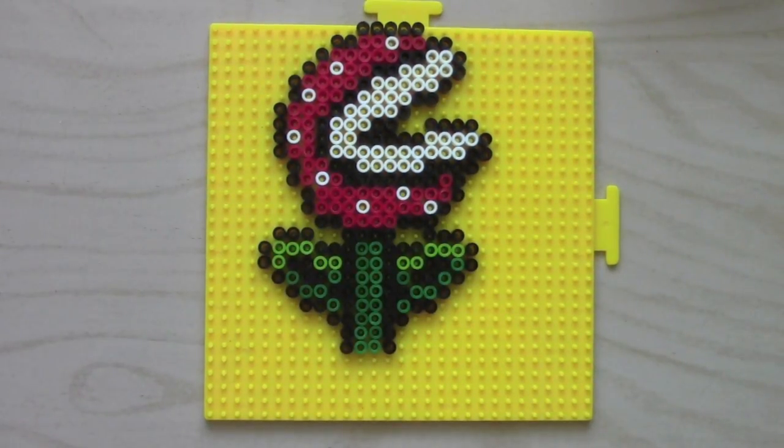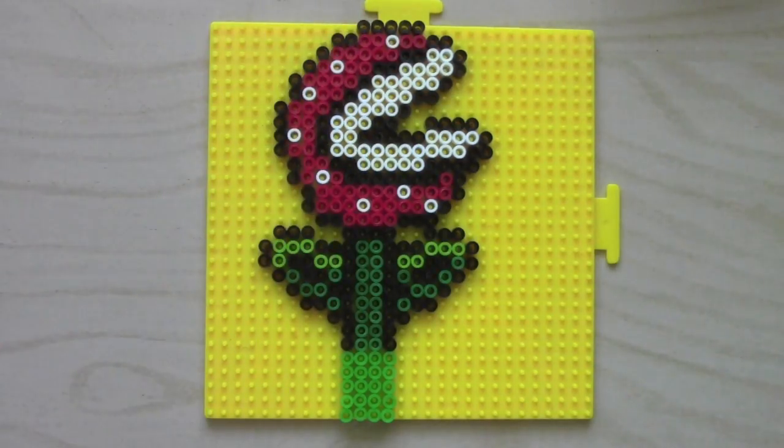For the root of the piranha plant, use any color because this part will not be seen. I used a translucent green for the root of the plant because I don't regularly use this color in any of my perler projects and it doesn't waste my black beads or any other colored beads.